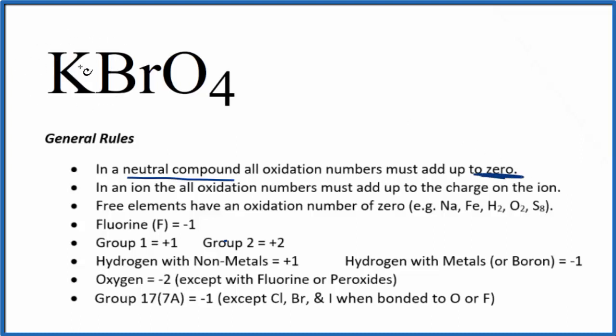We know that potassium here in group 1 will have a plus 1 oxidation number. Bromine, normally we think of that as minus 1 because it's in group 17. But when it's bonded to oxygen or fluorine, it doesn't have that minus 1, so we really don't know what it is. Let's call it x.